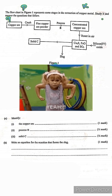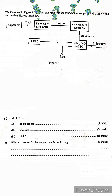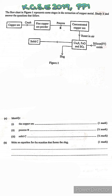I believe we are now ready to tackle another question. This is from 2019, paper 1. The question states: The flowchart in figure 1 represents some stages in the extraction of copper metal. Study it and answer the questions that follow. Before we answer the questions, let us first discuss the flowchart itself.